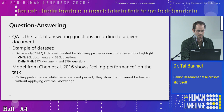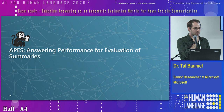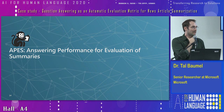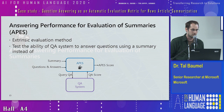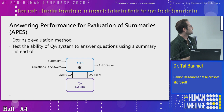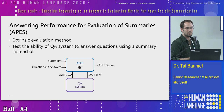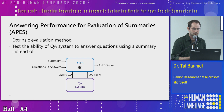Now I can present our method, called APES, which evaluates summaries by measuring how many questions can be answered using the summary. As you can see in the scheme, you take the summary and some question-answer pairs, feed them to a QA model, count how many answers were correct, and use that to calculate the score of the automatic summary. That's the main takeaway of this talk.